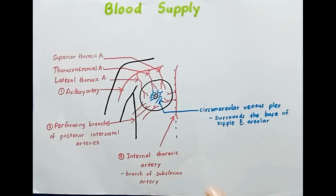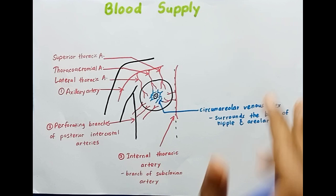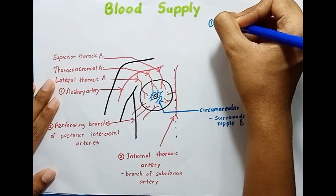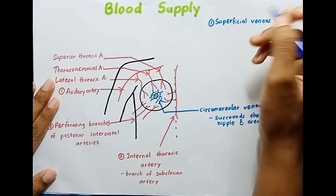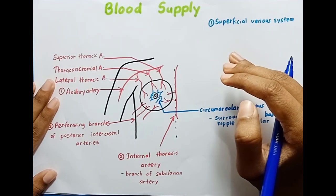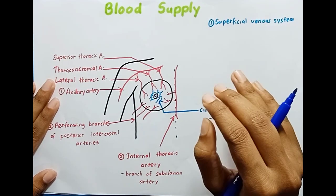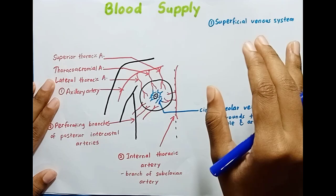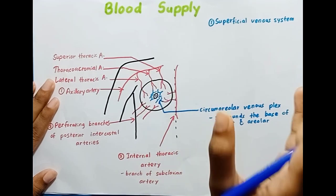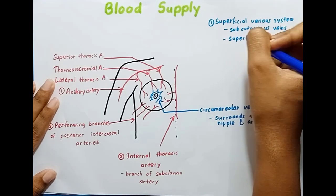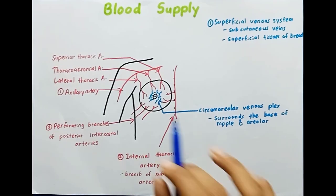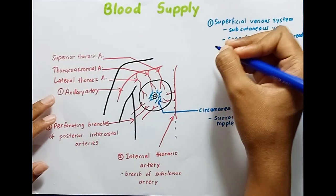The venous drainage can be categorized into two main systems: the superficial venous system and the deep venous system. The superficial venous system refers to the subcutaneous veins — veins directly under the skin — that drain the superficial tissues of the breast.